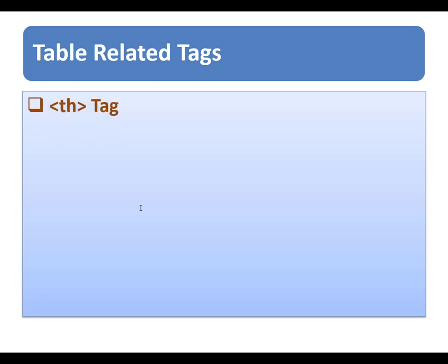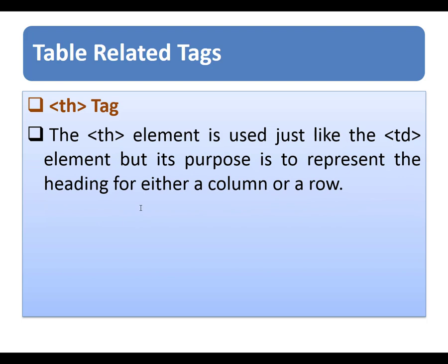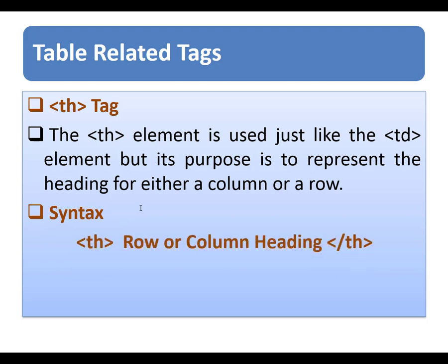The next tag is the th tag. The th element is used just like the td element, but its purpose is to represent the heading for either a column or a row. The th stands for table heading. The syntax uses opening and closing th tags, and the row or column heading goes in between. Even if a cell has no content, you should still use a td or th element to represent the presence of an empty cell, otherwise the table will not render correctly.